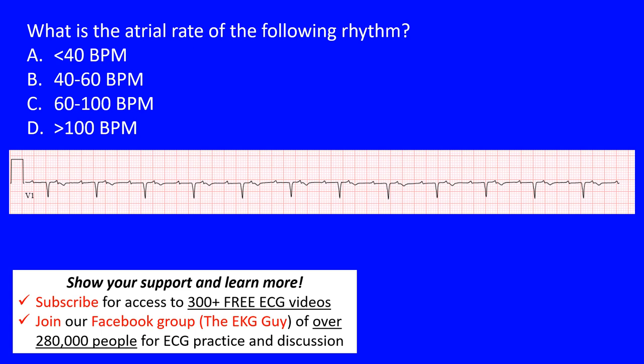Here we have a question looking at the rate of a rhythm. Specifically, it asks: what is the atrial rate of this rhythm here in V1? It gives a number of different rates — is it less than 40 beats per minute, between 40 and 60, between 60 and 100, or over 100 beats per minute?